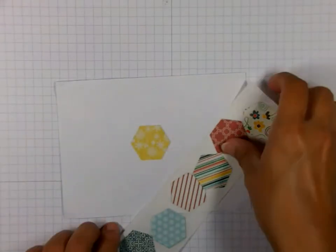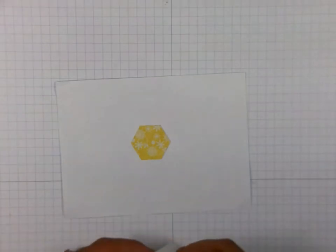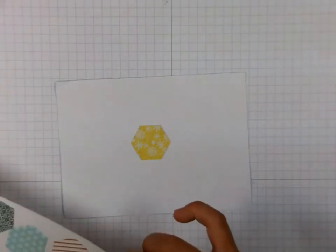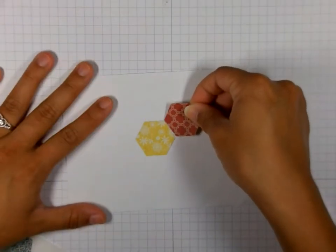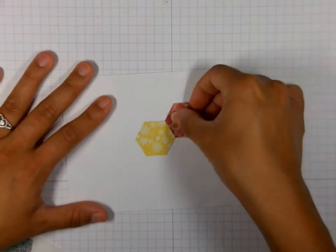This gives us a nice sticker with even adhesive coverage on the back of these hexagons so they will lay flat. I can simply lay them down as a sticker and they will stay put.